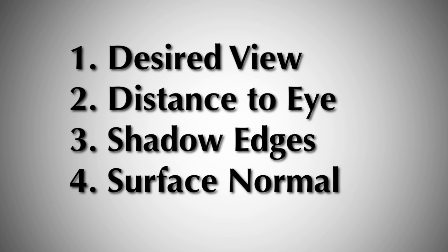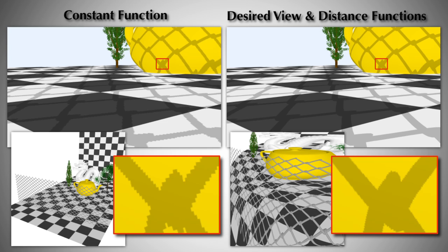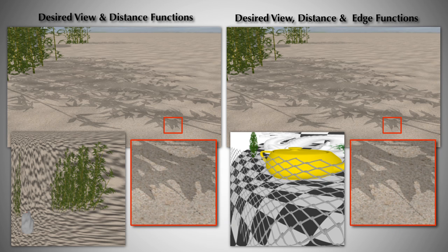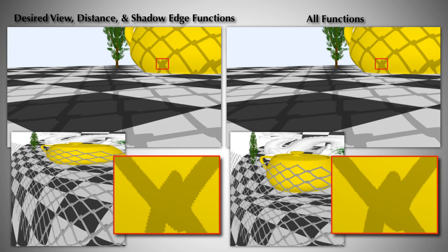This system can support many types of importance functions. Our implementation uses four importance functions. The first function excludes regions outside of the desired view, while the second gives increased importance to the regions closest to the desired viewpoint. The third function gives importance only to regions which have shadow edges, reducing the sampling of empty regions.